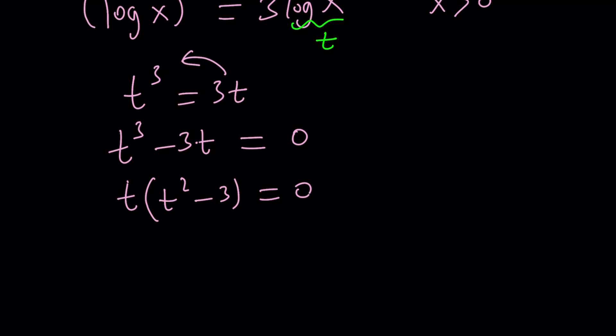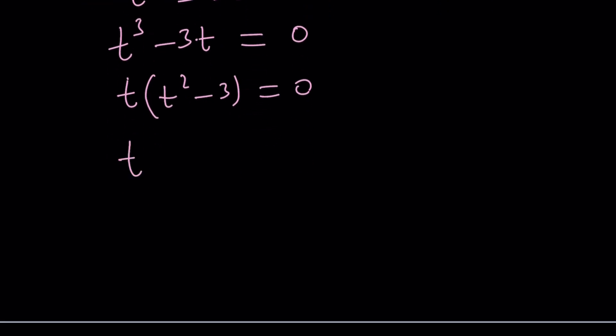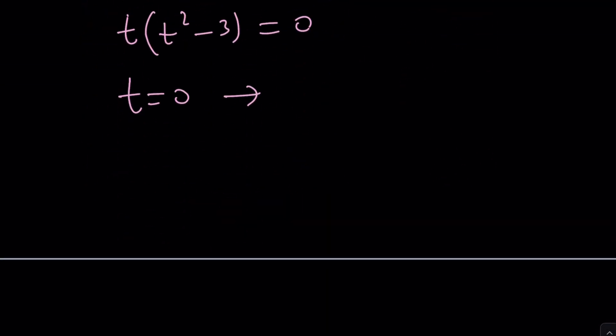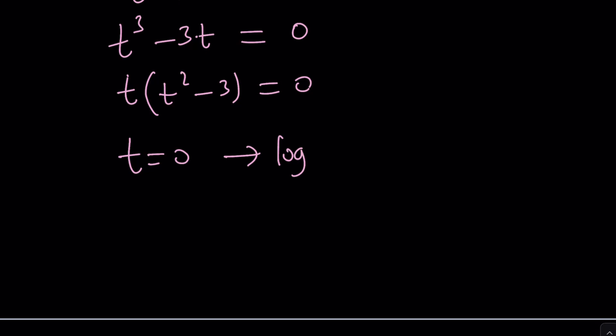Let's take a look at them. t equals 0. This means, what is t? Log x, remember? t is log x. So t equals 0 implies log x equals 0. Let's go ahead and write each one. We get square root of 3. That means log x is equal to square root of 3. And we have finally the opposite of root 3, which is negative root 3.